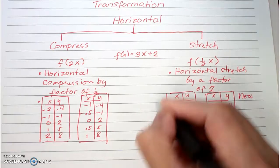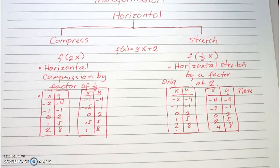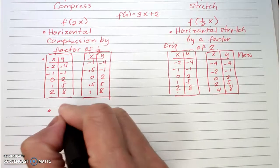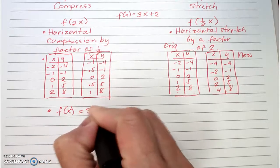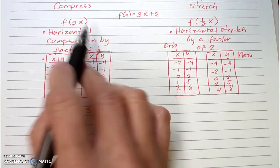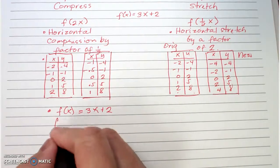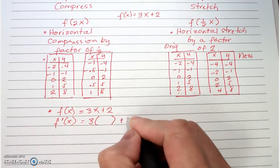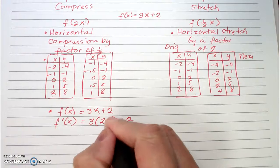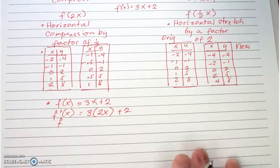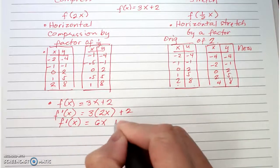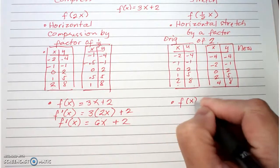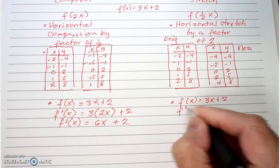This is your table representing your transformed function. Now let's go to the equation. Your original is f of x equals three x plus two. For the stretch, you want the new x-value to be plugged in, so your f prime of x will be three, and I replace x with a parenthesis ready to plug in — it becomes two x — therefore my f prime of x becomes six x plus two.